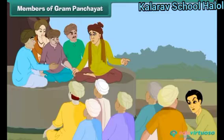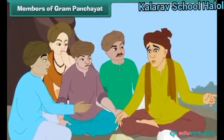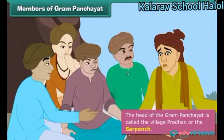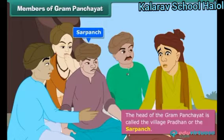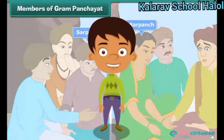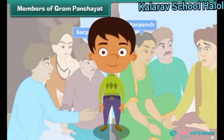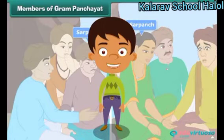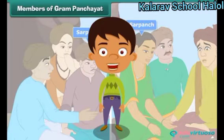A gram panchayat consists of five members. The head of the gram panchayat is called the village pradhan or the sarpanch. The sarpanch of a gram panchayat can be a male or a female. The members of a gram panchayat hold meetings to solve the problems of the villagers. The panchayat solves land, water, and other disputes among villagers.